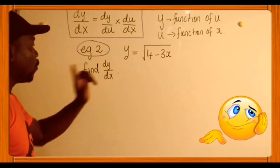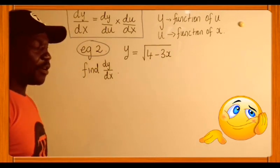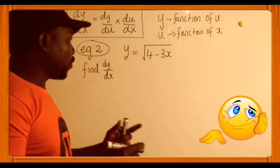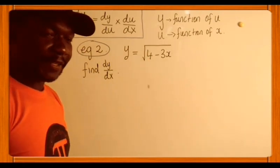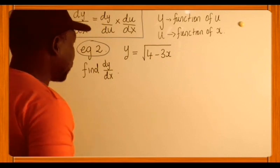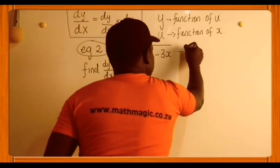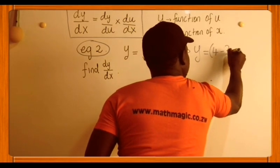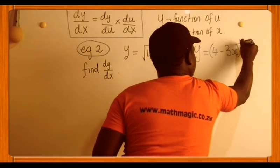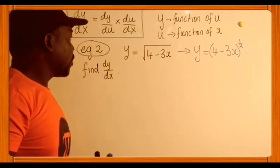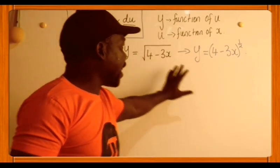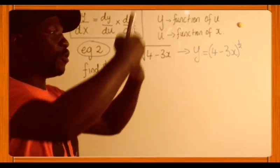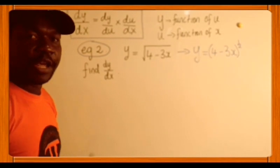Example 2. Now we have a square root sign — remember, function of a function: something is inside the square root. The first thing: make sure you rewrite this using indices. If you have a square root, rewrite it as a power of a half. So this is the same as y equals (4 minus 3x) to the power of a half. Remember, square root is to the power of half; if it were one over a square root, it would be to the power of negative half.